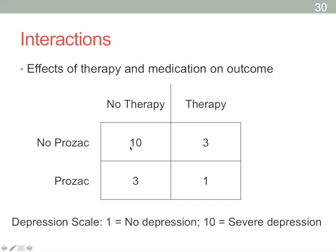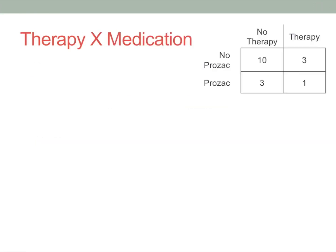For those who receive no therapy and no medication, depression scores are going to remain very high. For those receiving only therapy, the treatment likely has a big effect — a score of three out of ten. Similarly, medication alone probably yields a pretty good effect. But usually, people who receive both medication and therapy tend to yield the best effect of all. We can take this data and graph it.